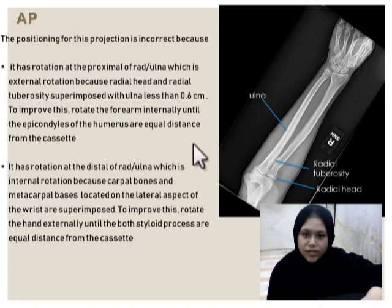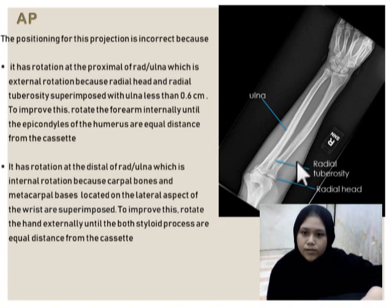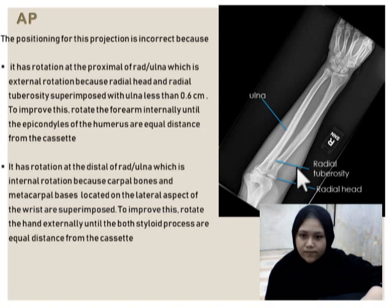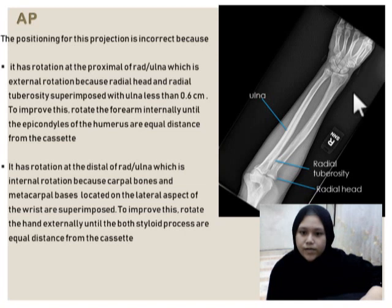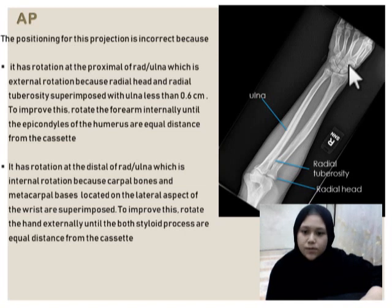The positioning for this projection is incorrect. It has rotation at the proximal, which is external rotation. To improve this, rotate the forearm internally until the epicondyles of humerus are equal distance from the cassette. It also has rotation at the distal, which is Ulna side — internal rotation — because carpal bones and metacarpal basis located on the lateral aspect are superimposed. To improve this, rotate the hand externally until both styloid processes are equal distance from the cassette.